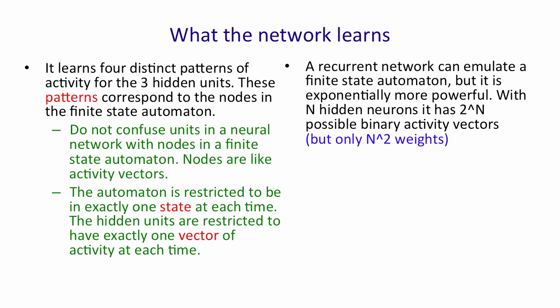So a recurrent neural network can emulate a finite state automaton, but it's exponentially more powerful in its representation. With n hidden neurons, it has 2 to the n possible binary activity vectors. Of course, it only has n squared weights, so it can't necessarily make full use of all that representational power. But if the bottleneck is in the representation, a recurrent neural network can do much better than a finite state automaton.